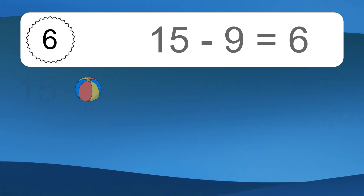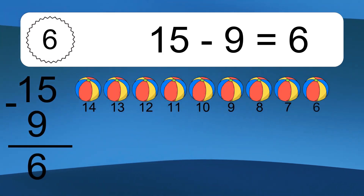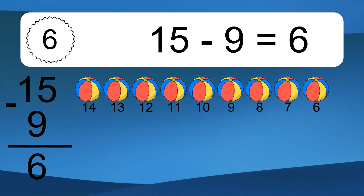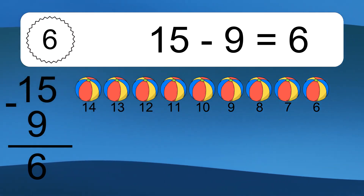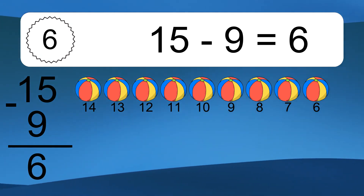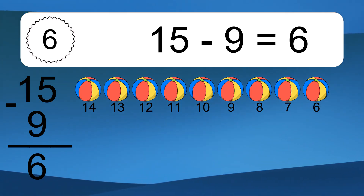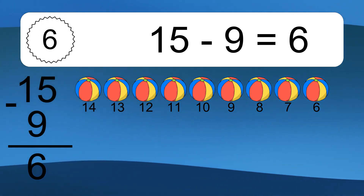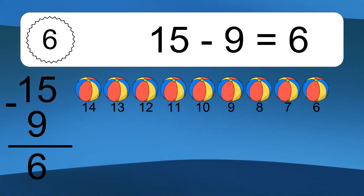15 minus 9 equals what? 15 minus 9 equals 6. Let's count it. 14, 13, 12, 11, 10, 9, 8, 7, 6.